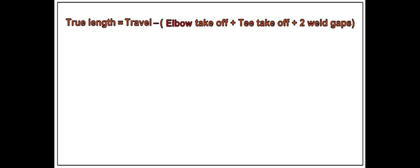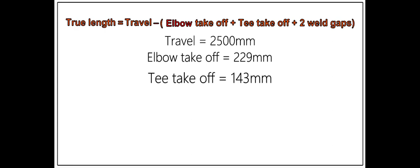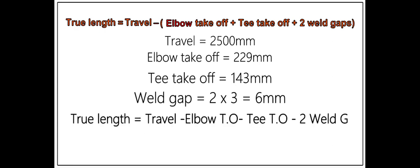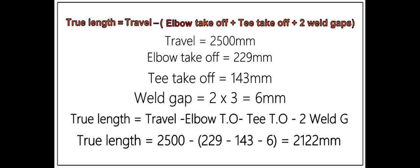We have all the required dimensions now. Deduct the takeoff of the tee and the elbow and two weld gaps from the travel length. The travel length is 2,500 millimeters. Elbow takeoff equals 229 millimeters. Tee takeoff equals 143 millimeters. Two weld gaps equals 6 millimeters. Let us apply the formula. The result is 2,122 millimeters.